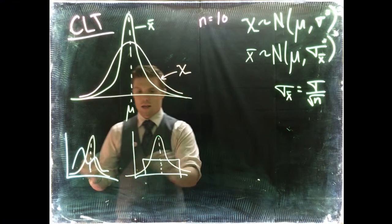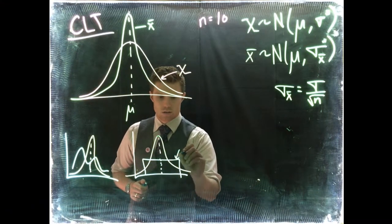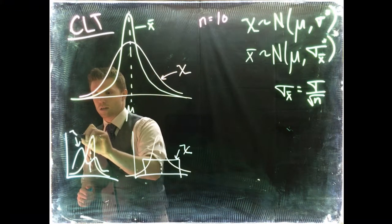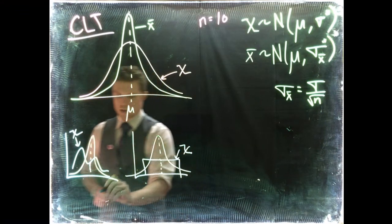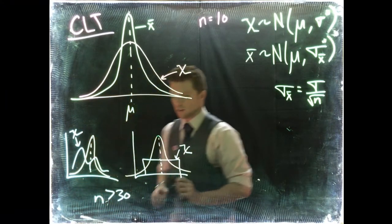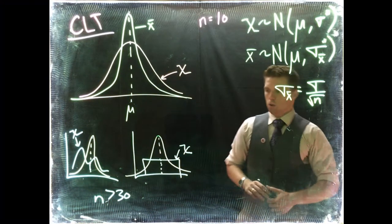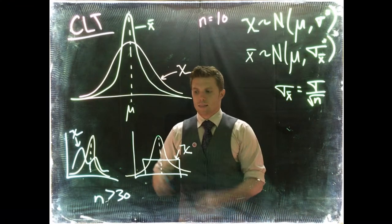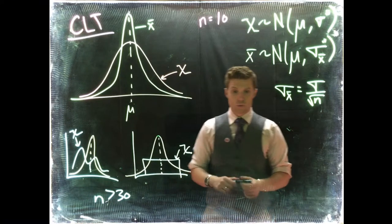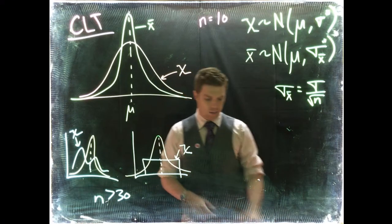But if our underlying distribution, that's X, is not normal, then we need to have a sample size of basically greater than 30. Some people say greater than or equal to 30. We'll just leave it as greater than 30. That's how big our sample size needs to be. If that is true, no matter what the underlying distribution is.